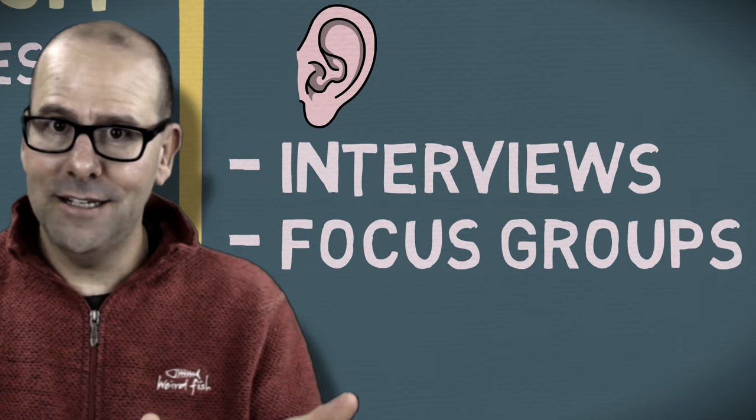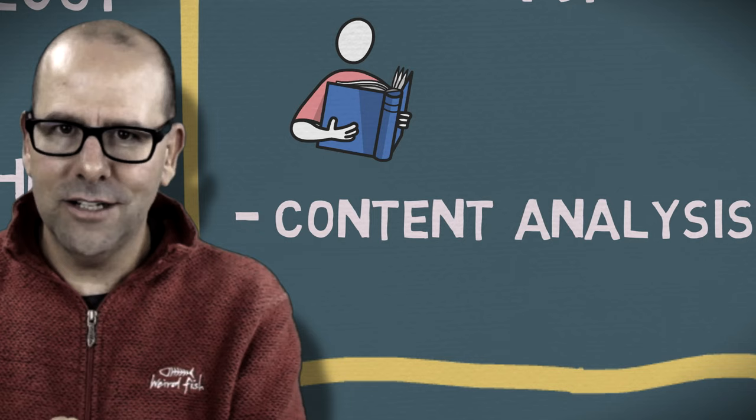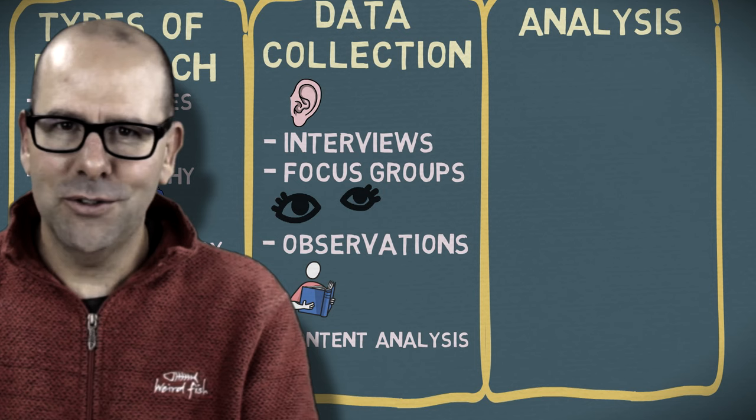There are three main sources of data in qualitative research: something you hear — such as an interview or focus group; something you see — observational data; or something you read — content analysis or document analysis.